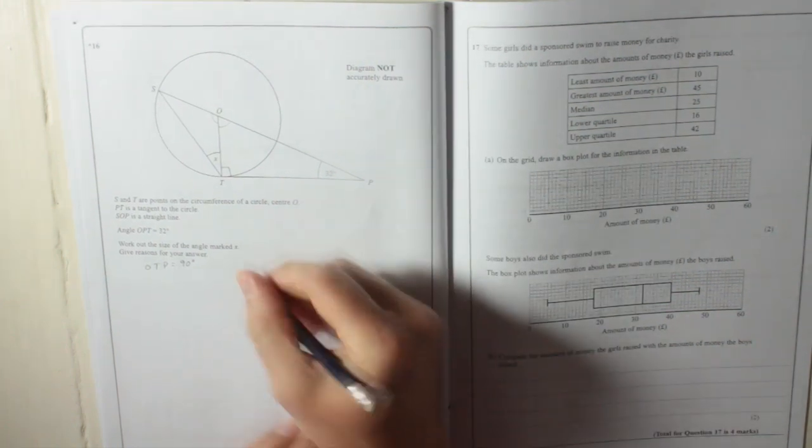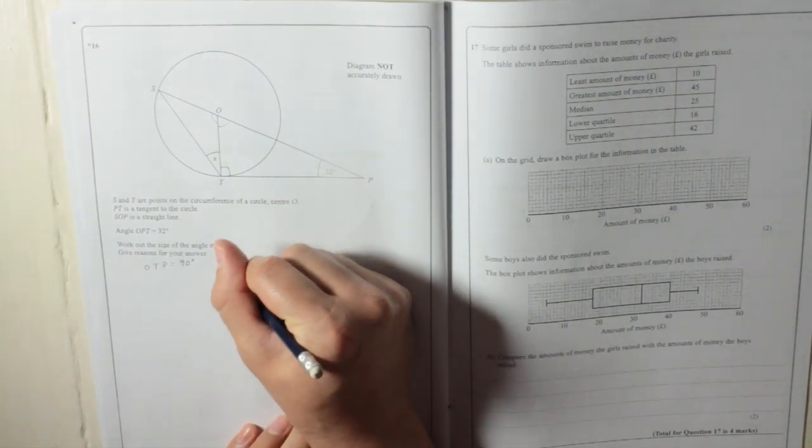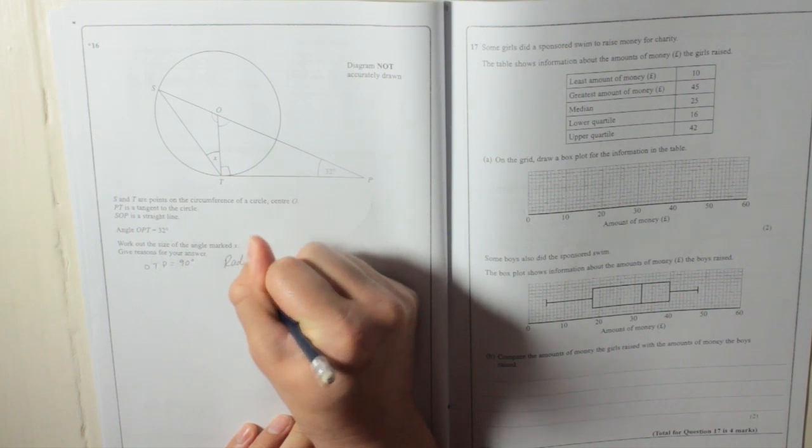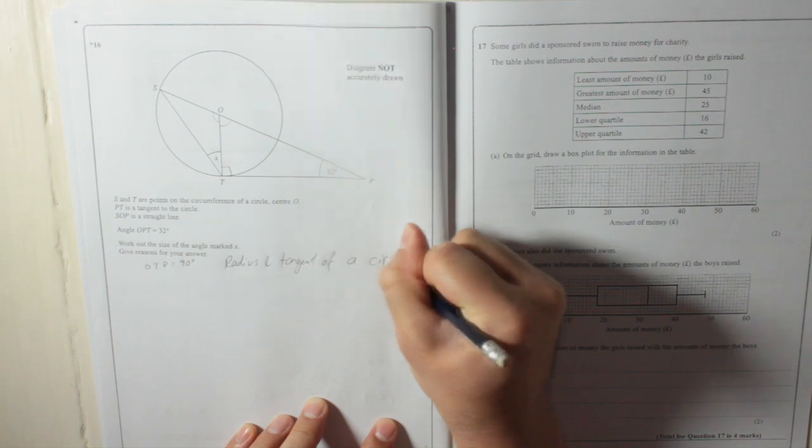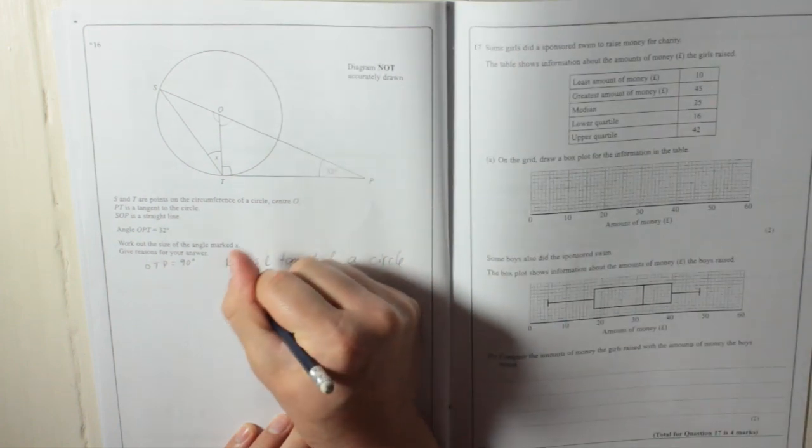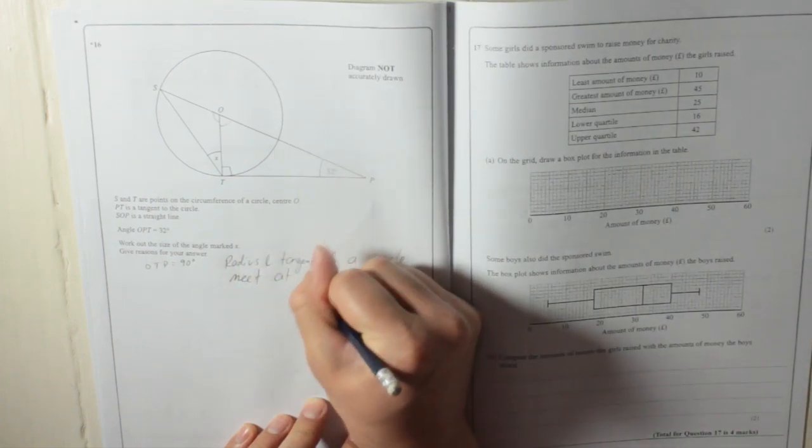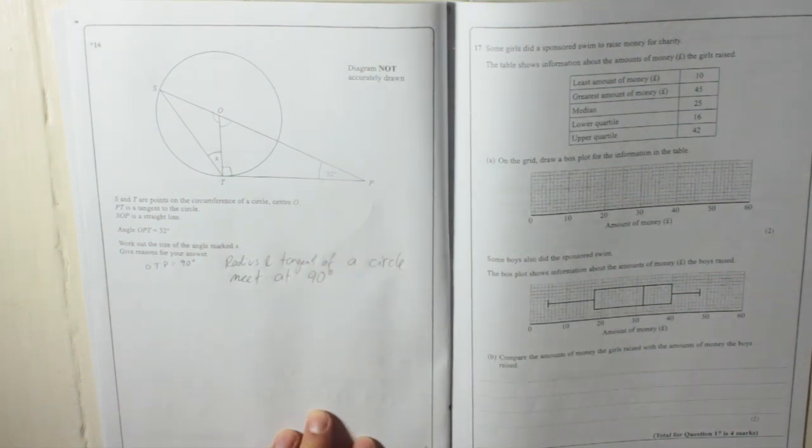My reason for knowing that is that radius and tangent of a circle meet at 90 degrees. So there's a reason. That's good.